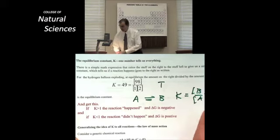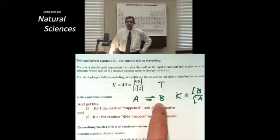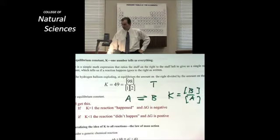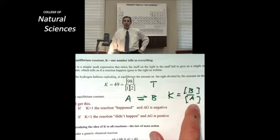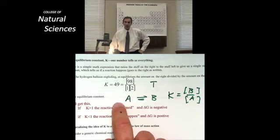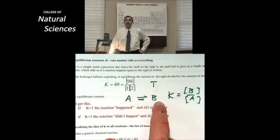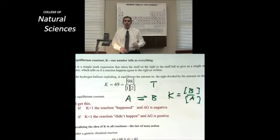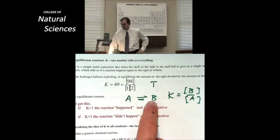doesn't it make sense that if I end up having more stuff form B than A, then B over A is going to be greater than 1. And I can say that the reaction moved to the right, that it happened as written. On the other hand,